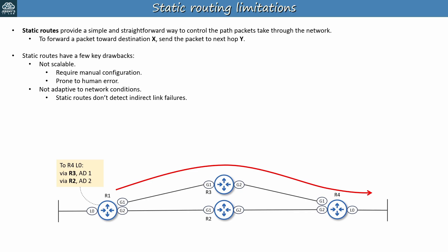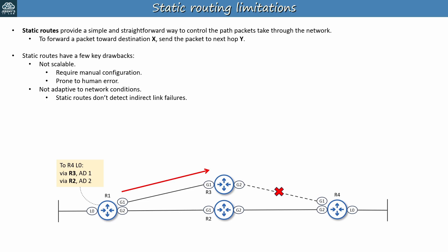But what happens if there is an indirect link failure — a link not connected to R1 goes down? For example, let's say the R3-R4 link goes down due to a hardware failure. From R1's perspective, this is an indirect link failure, but R1 doesn't know that there's anything wrong. So R1 continues sending packets via R3. R3 detects the failed link, so it might try to forward the packets via R1, assuming R3 also has a floating static route configured as a backup. But R1 once again tries forwarding the packets via R3, and now we have a loop, and the packets never reach their destination. If R3 doesn't have a floating static route pointing to R1, it will simply drop the packets — no loop, but the packets still don't reach their destination.